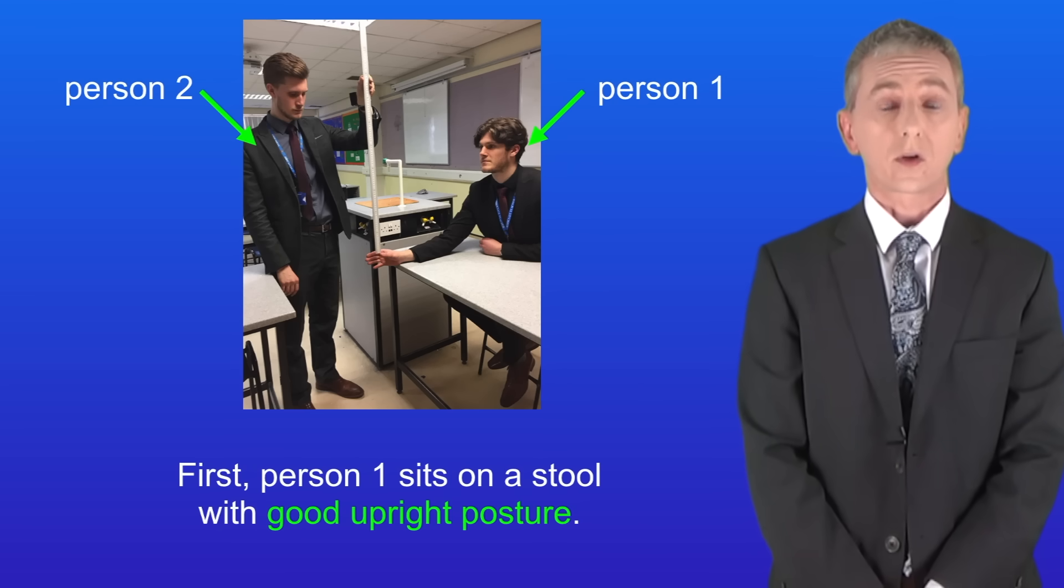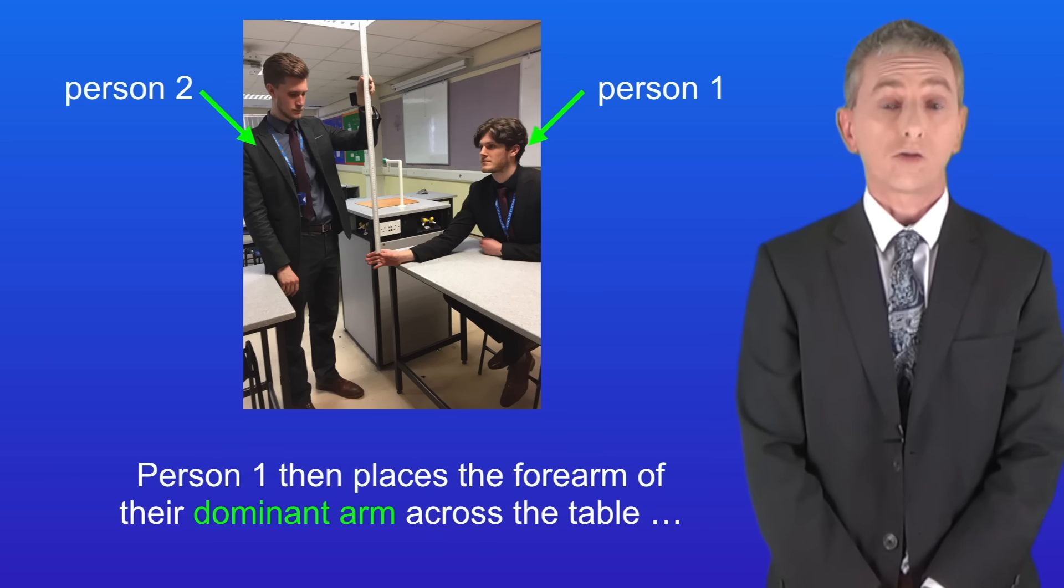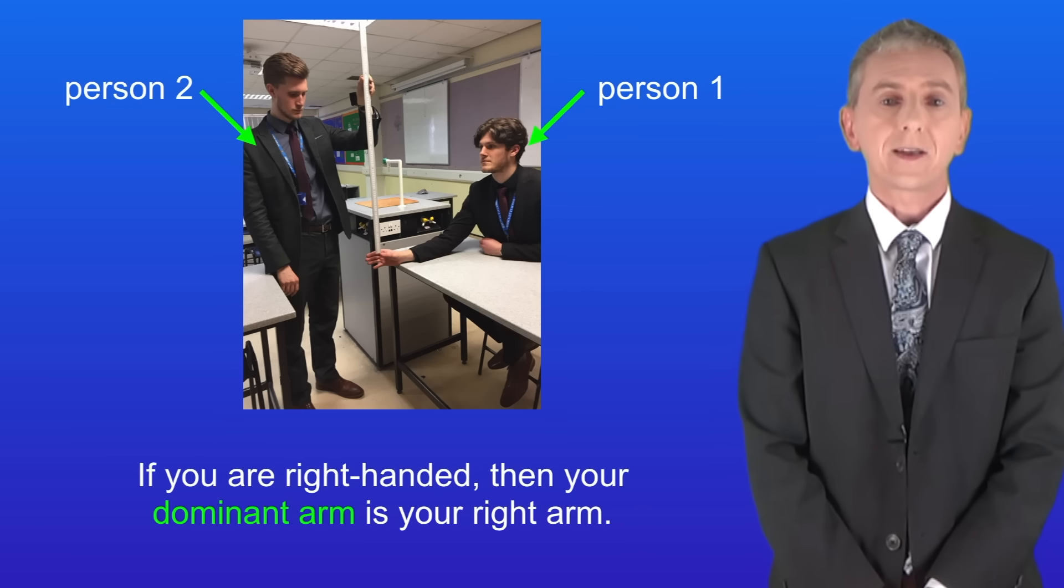First person one sits on a stool with good upright posture. Person one then places the forearm of their dominant arm across the table with their hand overhanging the edge. If you're right-handed then your dominant arm is your right arm.